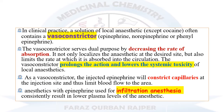Local anesthetics in clinical practice are used in conjunction with vasoconstrictor agents like epinephrine, norepinephrine, or phenylephrine. The purpose of using a vasoconstrictor with the local anesthetic is to decrease the rate of absorption and to prolong the action of the local anesthetics and decrease their systemic toxicity.